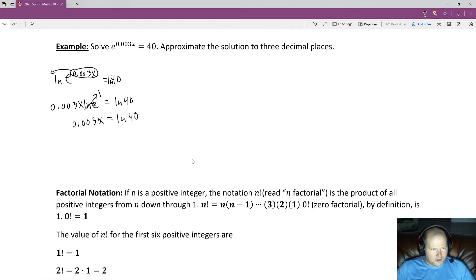Next, we want to get rid of or undo the multiplication of x by 0.003. And we undo that multiplication by dividing by 0.003. And whatever we do to one side, we do to the other. The 0.003s cancel out, leaving you x is equal to the natural log of 40 over 0.003.